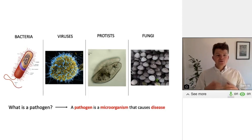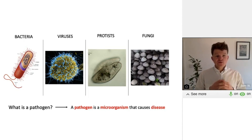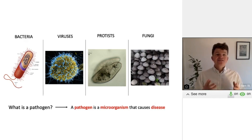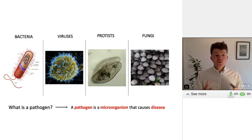Hi everybody. Today in GCSE Biology we're going to be looking at answering the question: what is a pathogen? A pathogen is a microorganism that causes disease, and this is the definition that you're going to want to learn for your exam. So it's a microorganism — a very small organism — that causes disease.